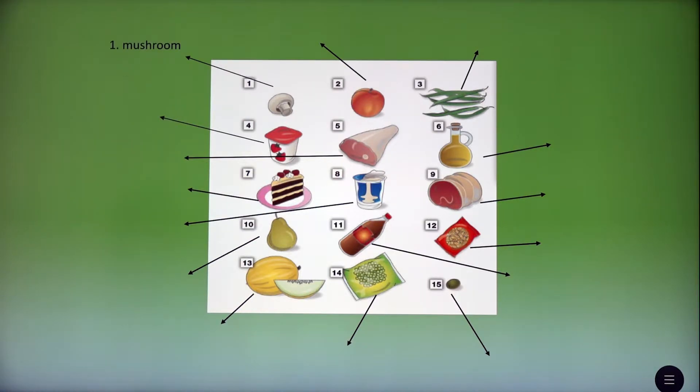The first, it's mushroom. The second, peach. Third, beans. The fourth, yogurt. The fifth, lamb. The sixth, oil.